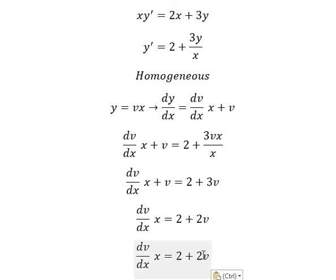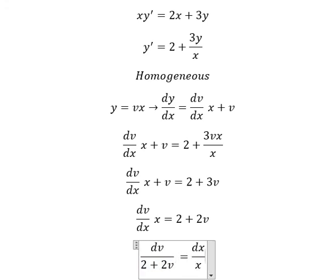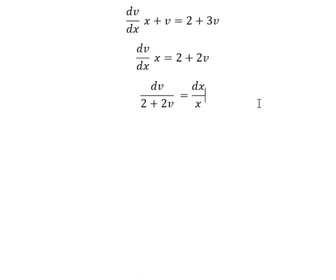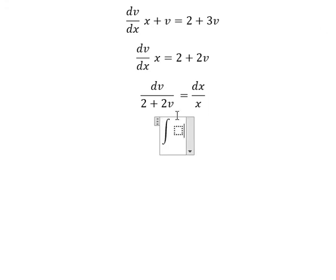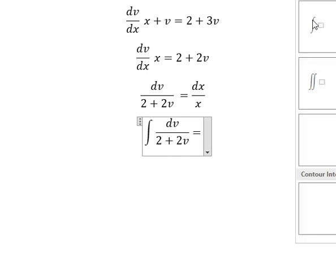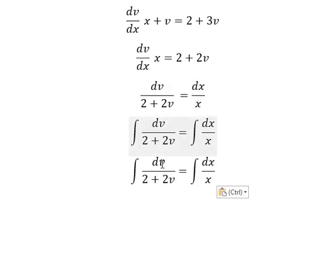Next, 2 plus 2v, we put on the left side. Next, the x terms we put on the right side, separating the variables.